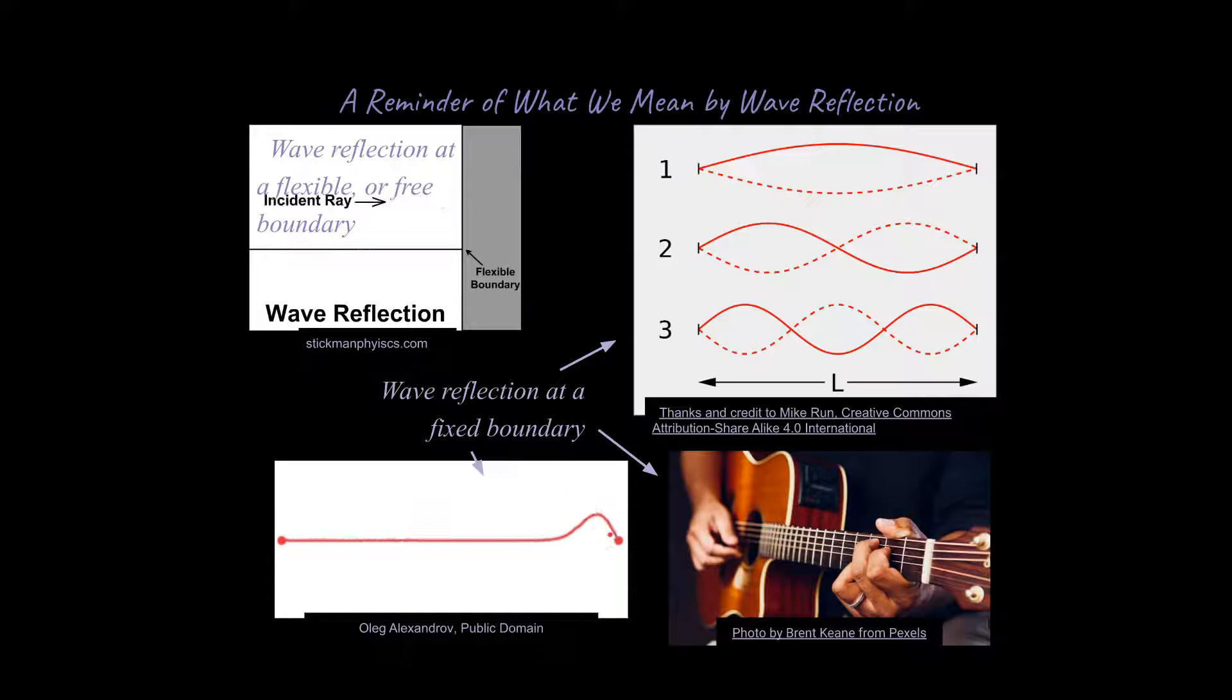So it's like it pushes up on something that's immovable. That immovable thing pushes back down on it, and as a result, it gets flipped, and it will be on the opposite side of the middle axis. We say that the wave is inverted after it interacts with the fixed boundary.